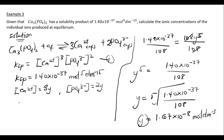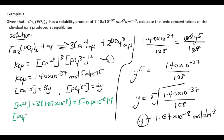The concentration of Ca²⁺ is 3 × (1.67 × 10⁻⁸) = 5.01 × 10⁻⁸ mol per dm³. The concentration of PO₄³⁻ is 2 × (1.67 × 10⁻⁸) = 3.34 × 10⁻⁸ mol per dm³. These are the concentrations of the individual ions at equilibrium.